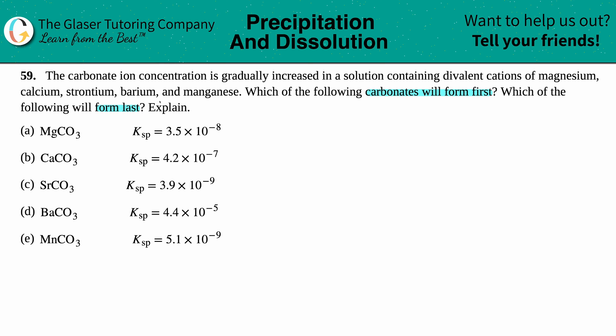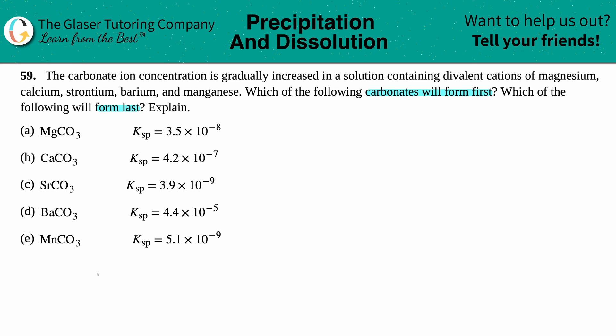There are two ways we could do it — we could do the math for all of these and pick out from lowest to highest which one forms first or last. But there is an easier way. If I look at all of these carbonates: MgCO₃, CaCO₃, SrCO₃, BaCO₃, MnCO₃...